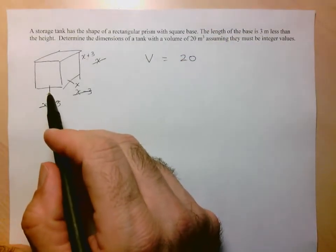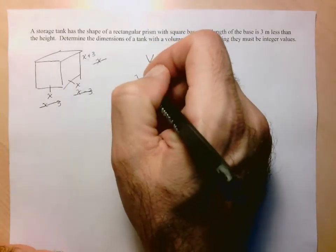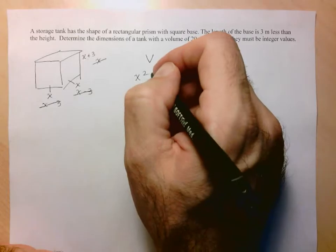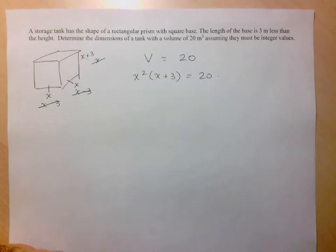The volume is just given by the base, area of the base times the height, which in this case here, area of the base is x squared and the height x plus 3, the way I've set it up. And that's got to be equal to 20.